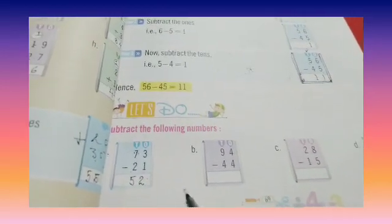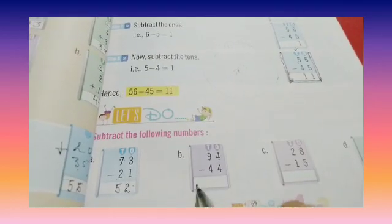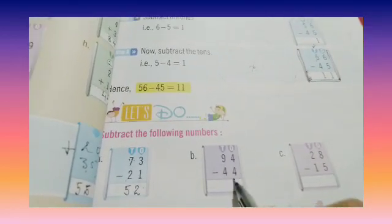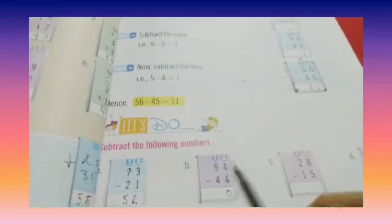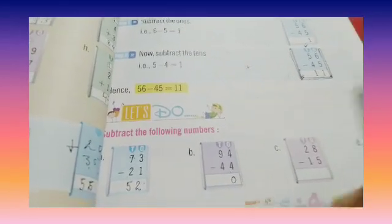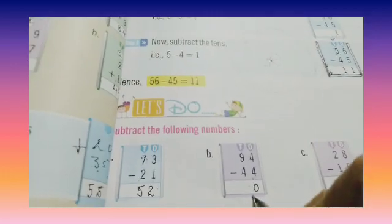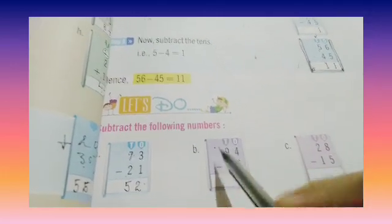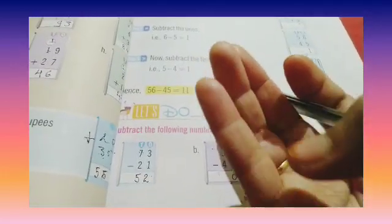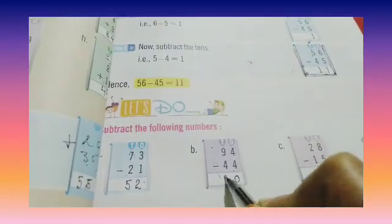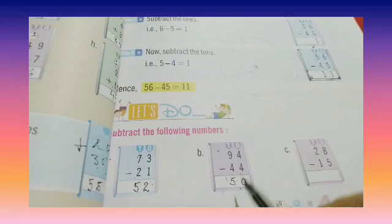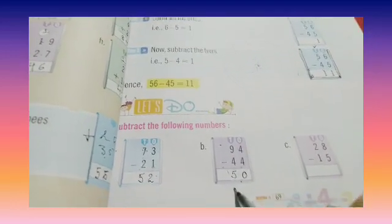Now part B, 94 minus 44. So 4 minus 4 is 0. Whenever a number is subtracted from itself we will get 0. Now 9 minus 4. 5, 6, 7, 8, 9. So 9 minus 4 is 5. So the answer is 50. 94 minus 44 is 50.